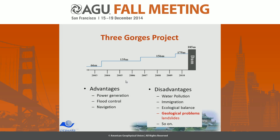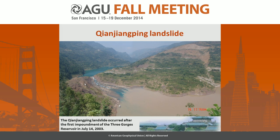Along with the increasing water level, a lot of geohazards arose, mostly landslides in this area. For example, one landslide occurred on July 14, 2003, just after the first impoundment of the Three Gorges reservoir. The name of this landslide is the Chen Jiangping landslide.